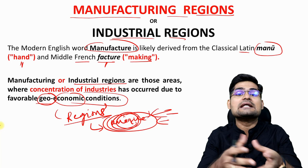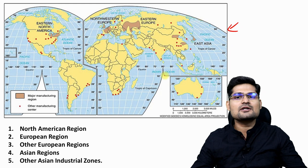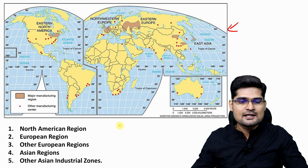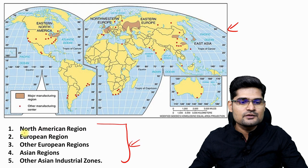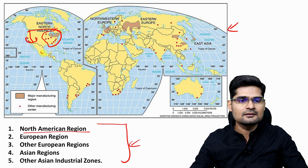On the world map, you can pause the video and draw or mark these regions yourself. There are five major broad industrial regions across the world. The first is the North American region — the West Coast, East Coast, the Great Lakes area, and some portions of Canada — where you have major manufacturing units.